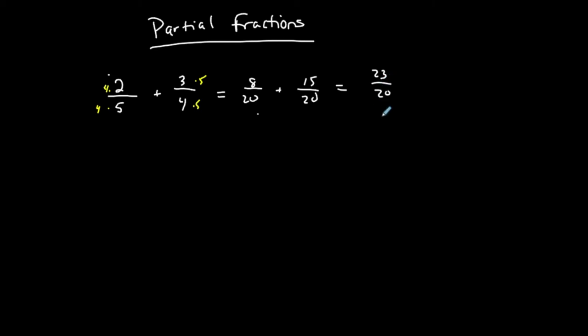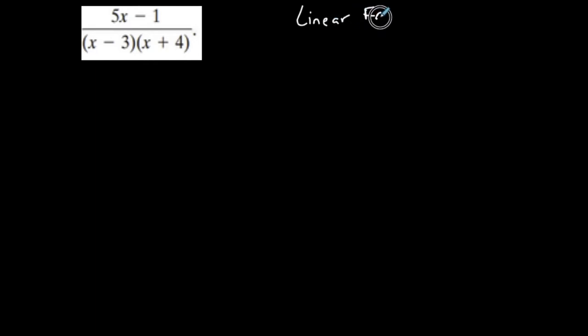So partial fraction decomposition is taking a single fraction and going into a sum or difference of two or multiple separate fractions. I'm taking a single rational function — basically a fraction with polynomials on the top and on the bottom — and the bottom is already factored for me. We're going to start with linear factors in the denominator.